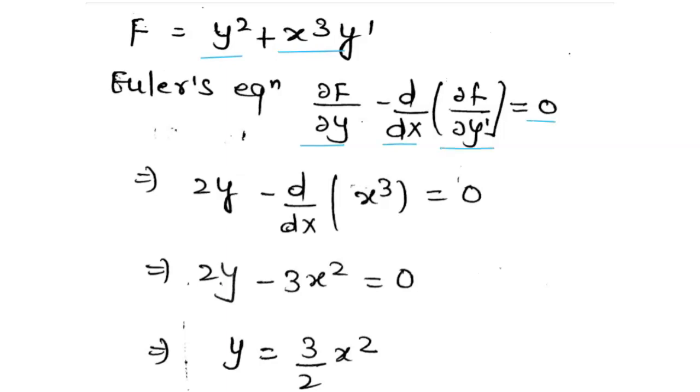So using Euler's equation we find the value: 2y minus d/dx of x cubed equals 0. The differentiation of x cubed is 3x squared. So if we simplify here, we have the value y equals 3/2 times x.